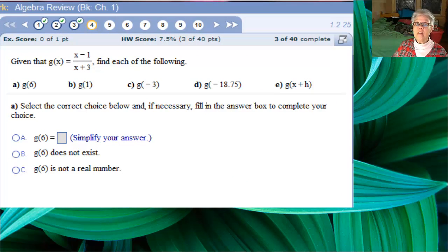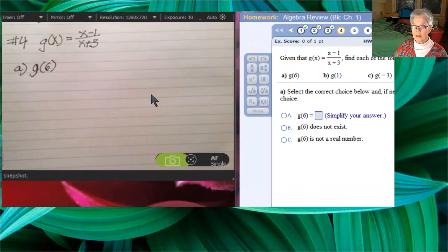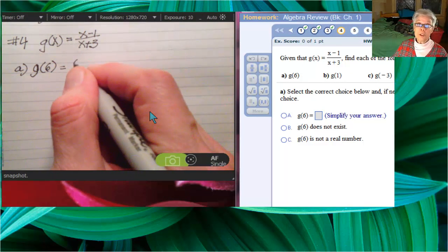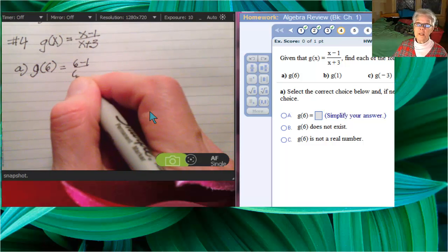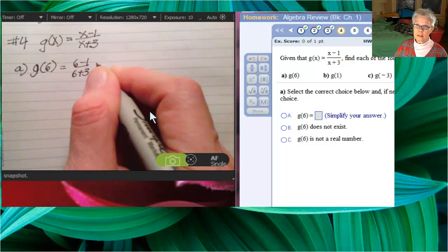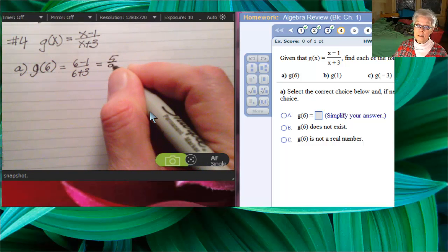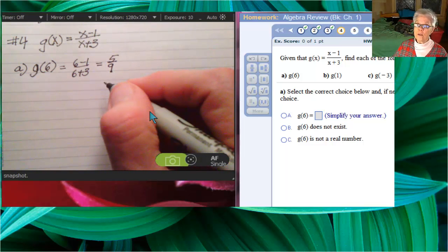Now, we're going to evaluate a function for different numbers and expressions. For g of 6, we're going to substitute 6 for all the x's. That will give us 5 over 9.